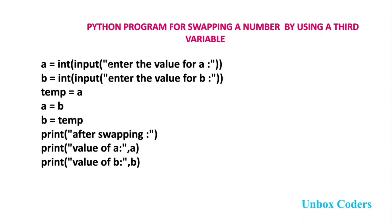We display a message: 'Enter the value for a', which will display in the output window. Then we go to the swapping process. We write temp is equal to a, so the value of a is assigned to temp. Next, a is equal to b, so the value of b is stored in a. Then we write b is equal to temp.